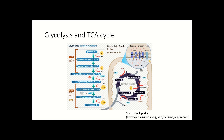Regarding the TCA cycle or citric acid cycle, pyruvate is converted to acetyl CoA by the pyruvate dehydrogenase enzyme. This acetyl CoA enters the mitochondria and after interacting with oxaloacetate it forms citrate, entering the TCA cycle or Krebs cycle. This entire process of the TCA cycle occurs in the matrix of the mitochondria.